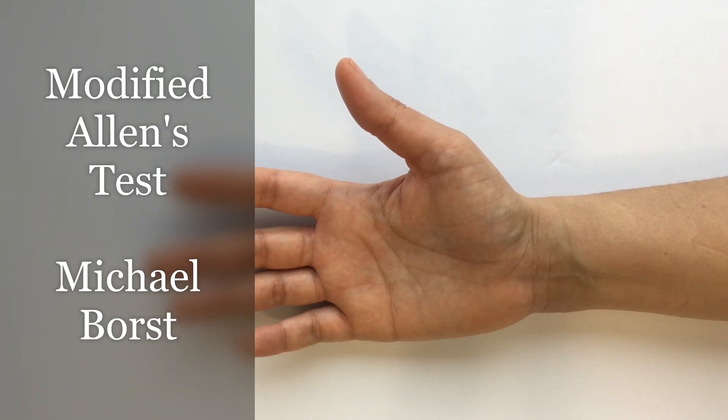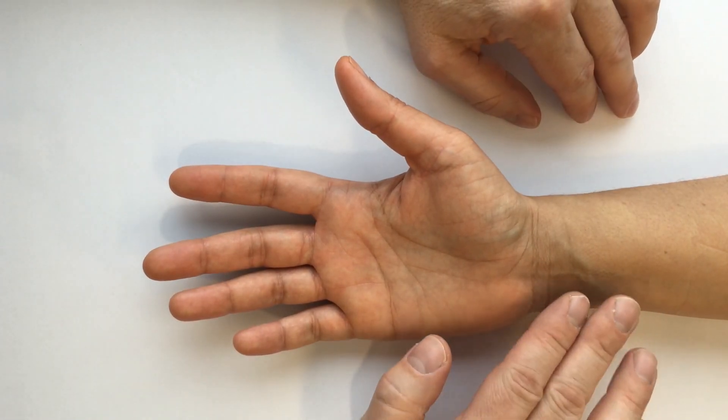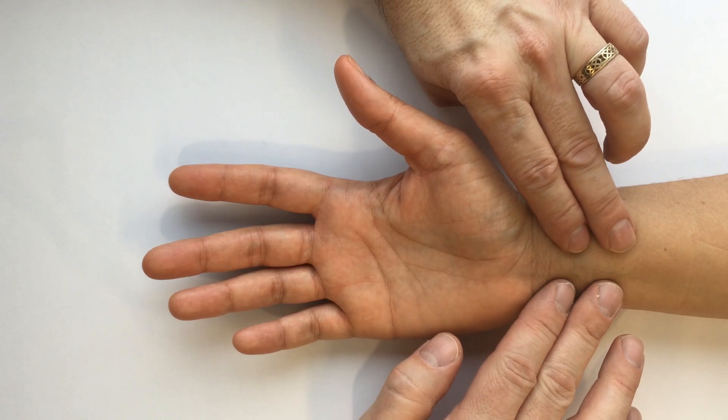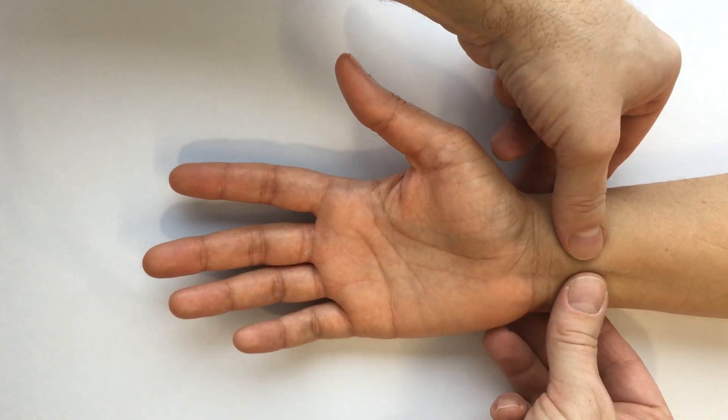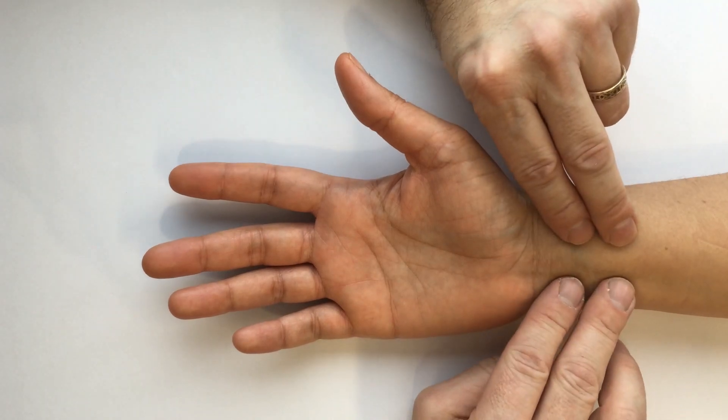For the modified Allen's test, you want to use your index and middle fingers to apply firm pressure to both the ulnar and radial arteries. You can also do it with your thumbs, but you get better compression with the index and middle fingers together.